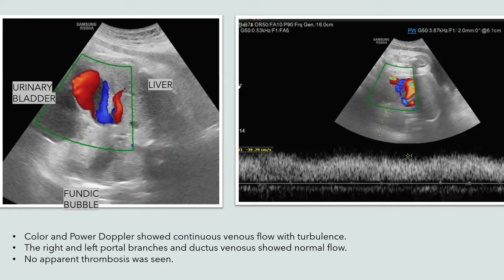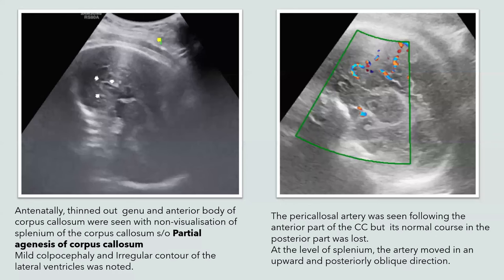The right and left portal branches and ductus venosus showed normal flow and no apparent thrombosis was seen. Antenatally, thinned out genu and anterior body of the corpus callosum was seen with non-visualization of the splenium, suggestive of partial agenesis of corpus callosum. This was associated with mild colpocephaly and irregular contour of the lateral ventricle. The pericallosal artery was seen following the anterior part of the corpus callosum, but its normal course in the posterior part was lost, and at the level of the splenium the artery moved in an upward and posterior oblique direction.